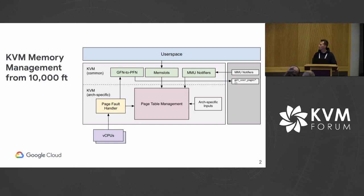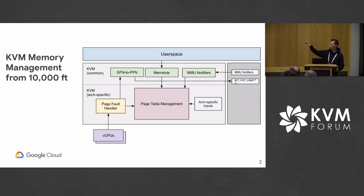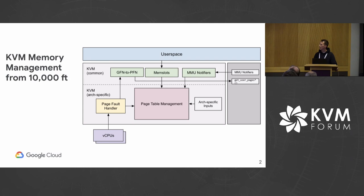And then MMU notifiers coming from the host to reflect changes in the host page tables into KVM — such as if a page gets swapped out, unmapping it from KVM's page tables. The core of managing memory in KVM is the page table management, which is actually how the memory gets mapped into a running virtual machine, and there are a lot of concurrent inputs to this.